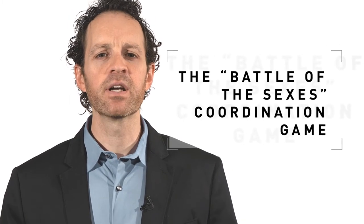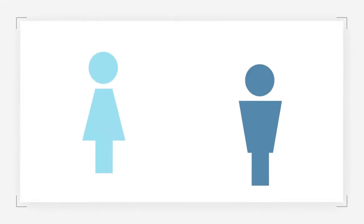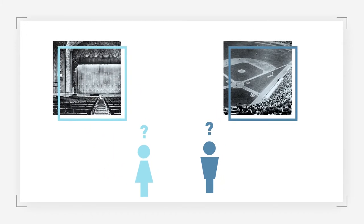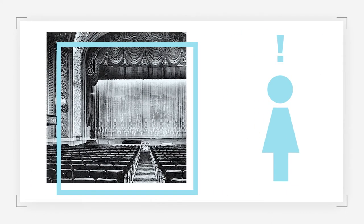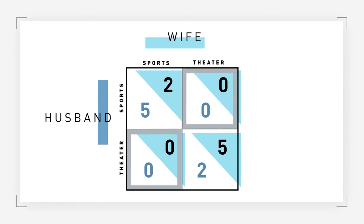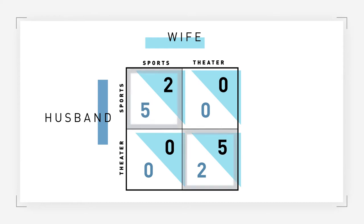Another well-known illustration of a coordination situation is called the battle of the sexes. A couple has plans to meet, but can't remember if they agreed to meet at the theater or at a sporting event. The husband prefers the sporting event, while the wife prefers the theater. However, both would prefer to go together to the same event as a couple instead of being at either event alone. The off-diagonals — 0-0 — represent a lack of coordination and the least preferred outcome for both. The husband receives a higher payoff if they attend the sporting event, since that's his top preference, and the reverse holds for the wife. The two highlighted equilibria are both Nash equilibria, since neither party has the incentive to change their strategy based on the strategy chosen by the other party.